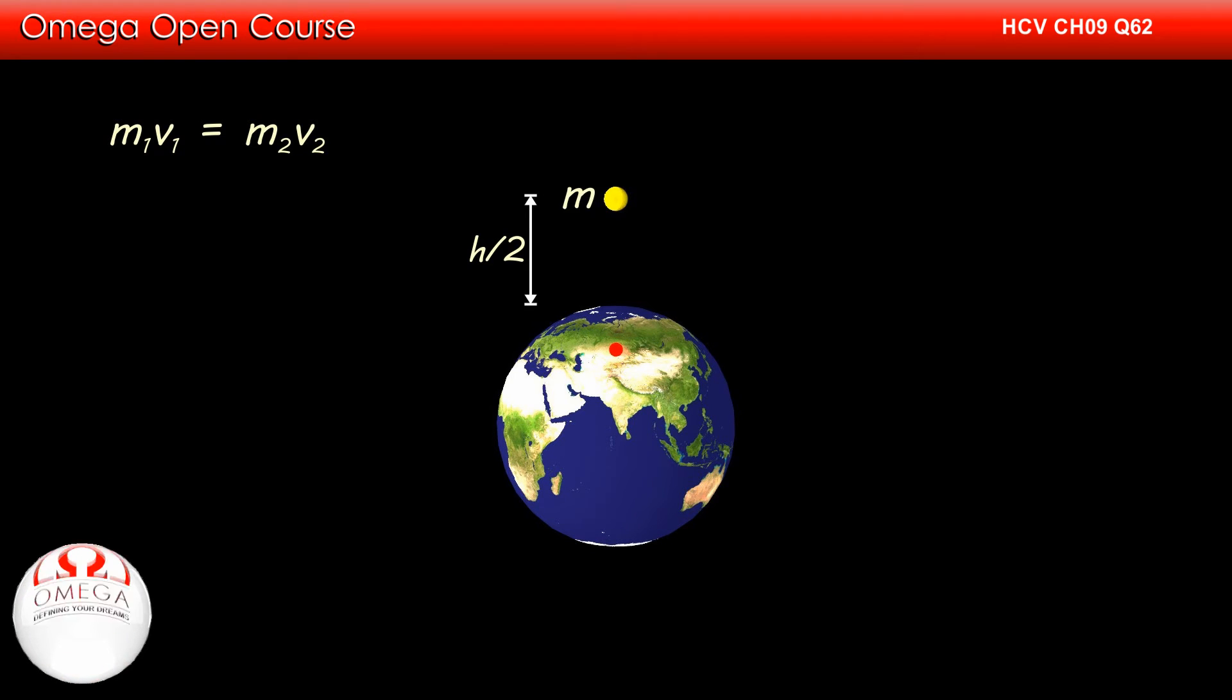If we denote the mass of the block by m, then as per the question the mass of earth is 2m. Let us assume the speed gained by the block be v and that by the earth be v'. Putting these values, we get mv = 2mv' or v' = v/2.